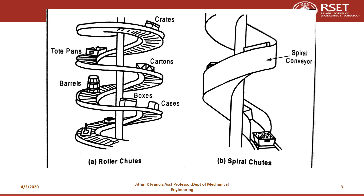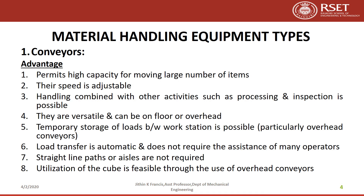These are the two types of chutes — one is a roller chute and the other one is a spiral chute. Both use the principle of gravity to unload the material. Now let us see the advantages of conveyors.